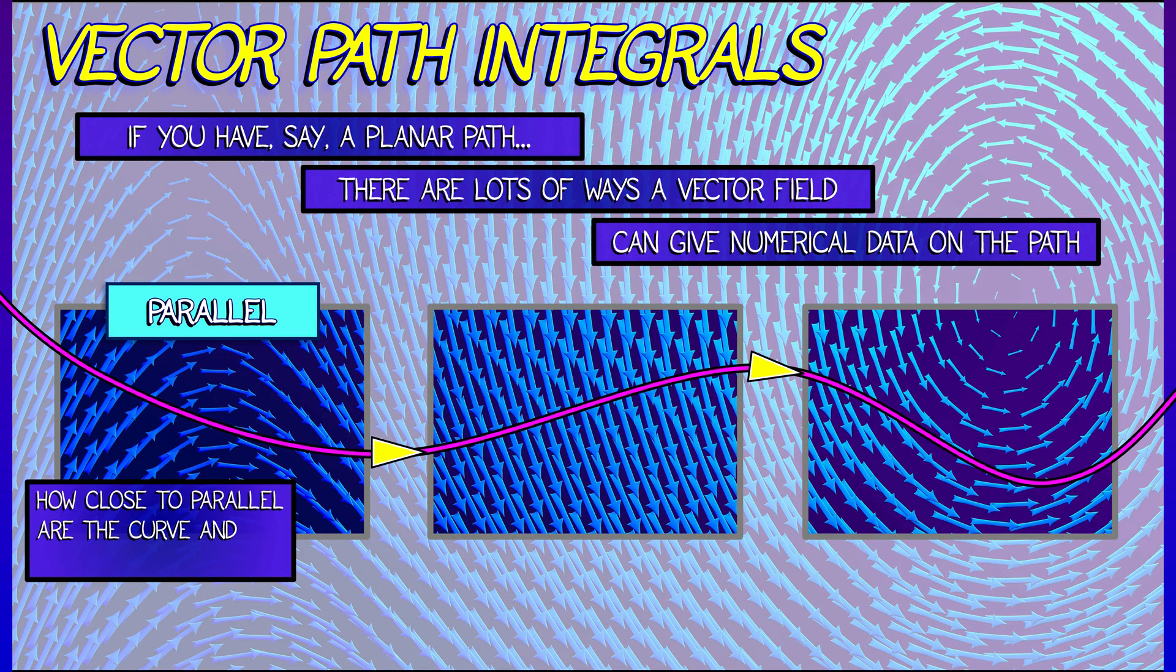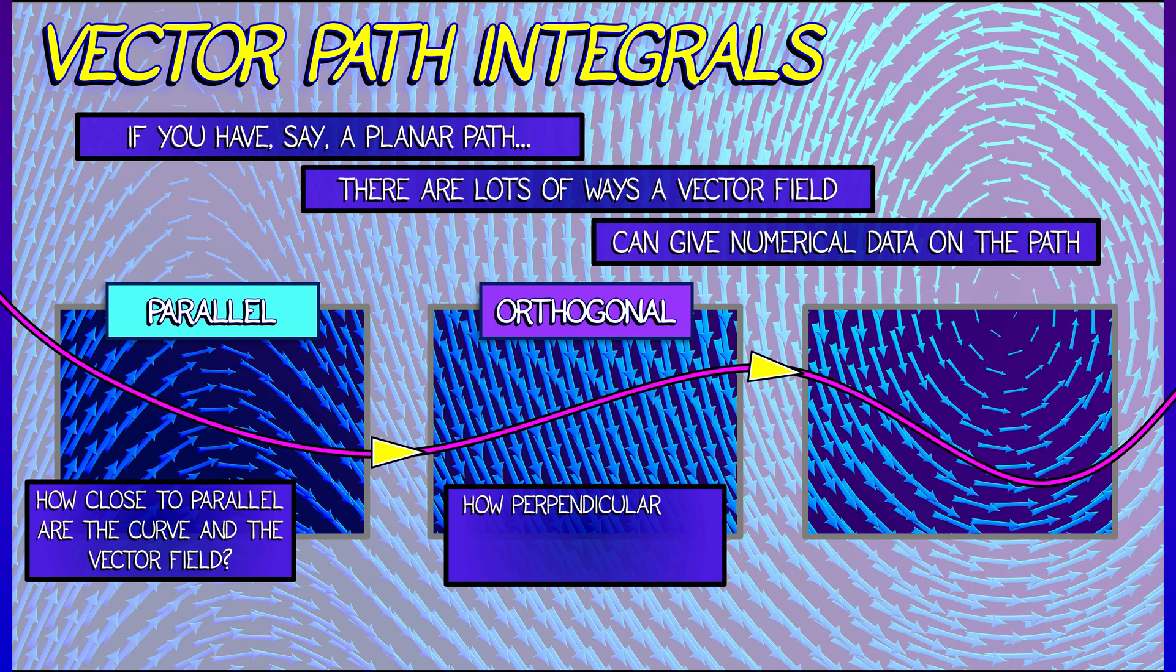For example, how close to parallel are the tangent vectors to the curve and the vectors in the vector field, or how orthogonal are they?